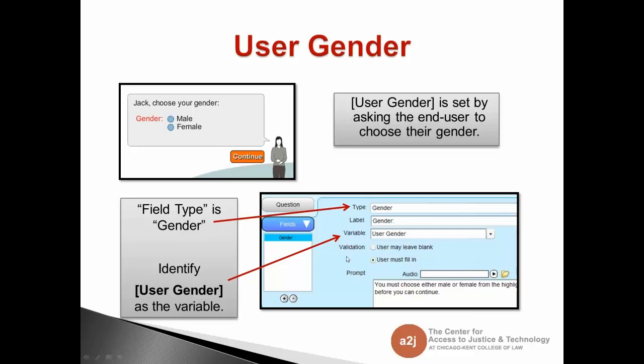In the backend in A to J Author, this question's type is gender, the label is preset to gender, and the variable is user gender. Leave this variable — don't change it to the naming conventions. We talked in the past about how the doc assembly community uses a standard naming convention with a two-letter moniker at the end. Don't use that here; leave it as user gender. Because it's a program variable, it doesn't have to match the naming convention.